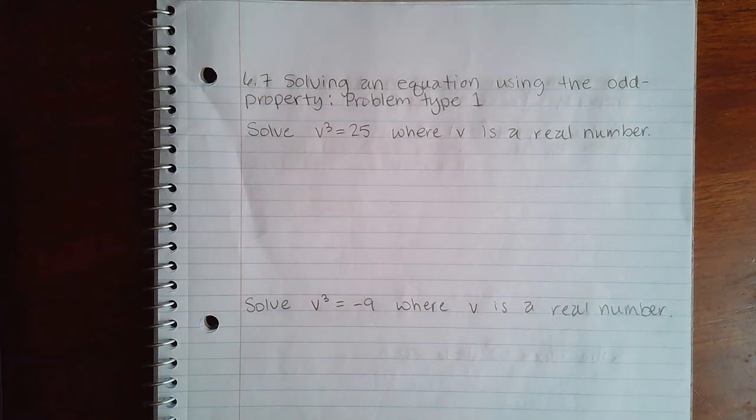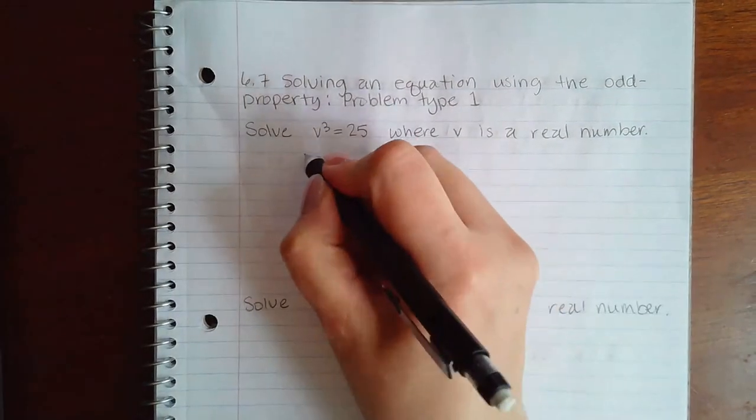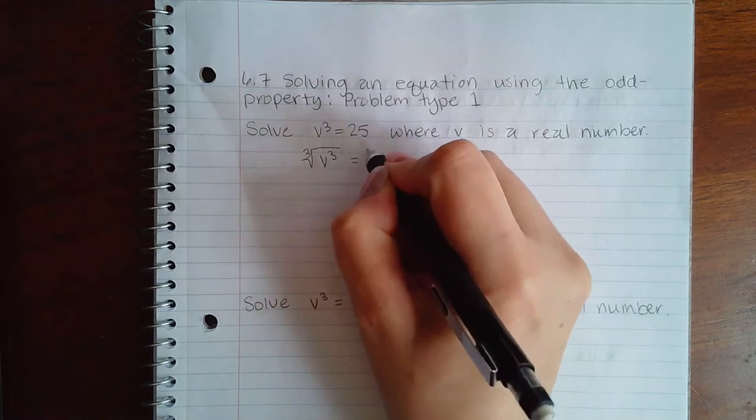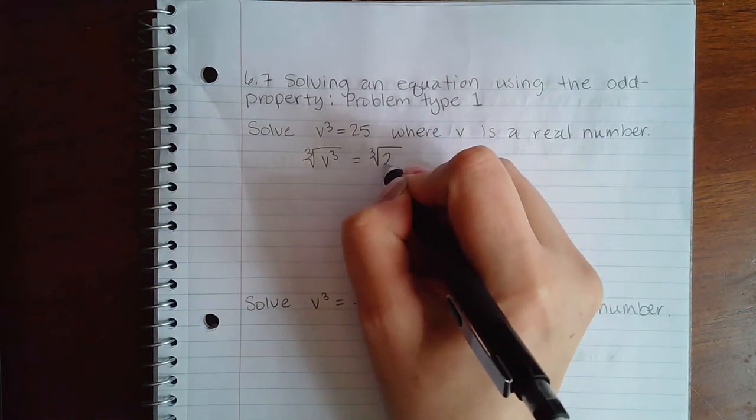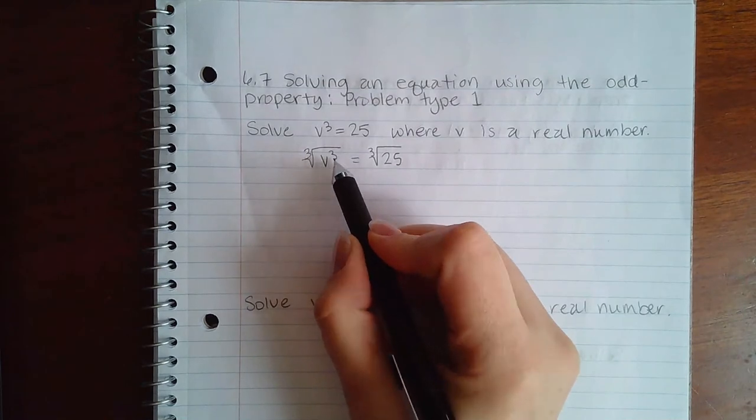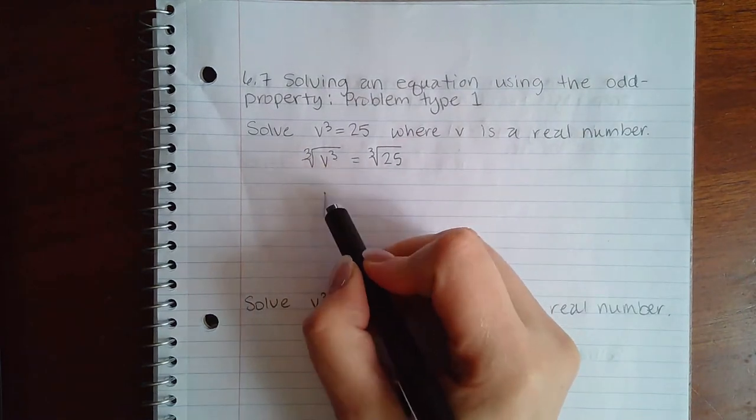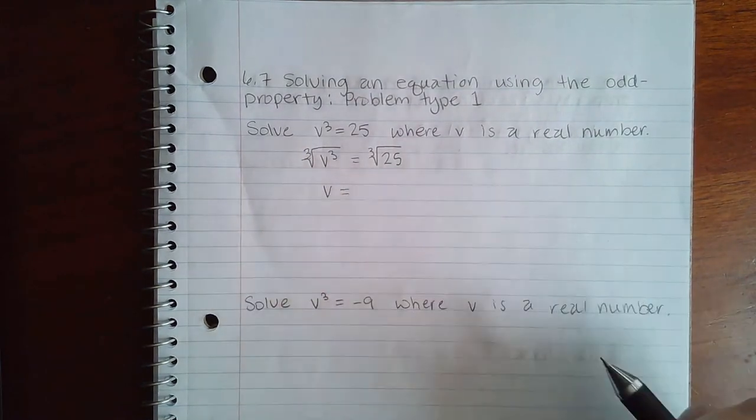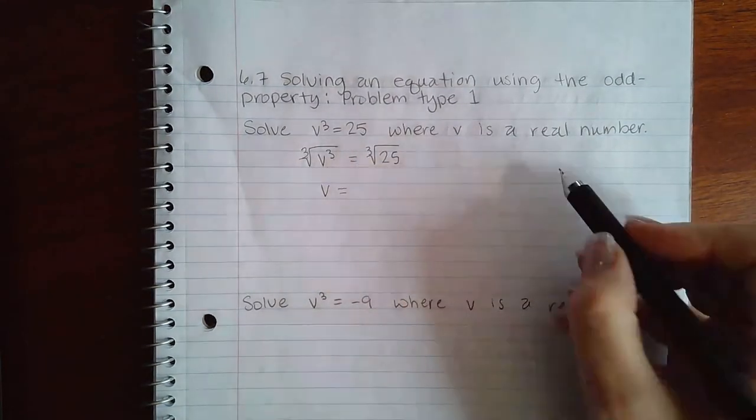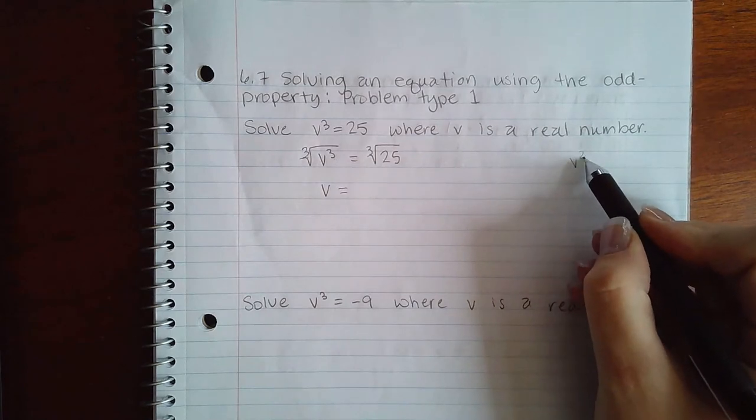Just like we have a square root property, we also have an odd property which tells us that if we take the odd root of both sides, this root will undo this exponent leaving you with just v. And then on this side you don't need to have a plus or minus symbol like when you take v².